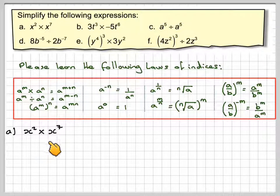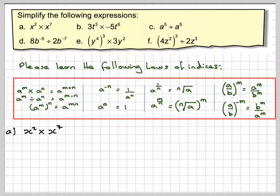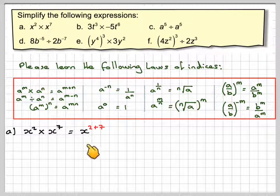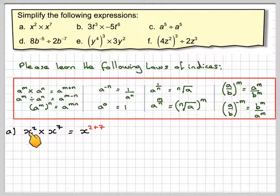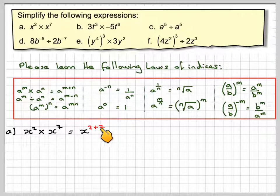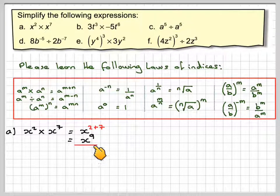Right, so we've got x squared times x to the power of 7. So it's like the first rule here, so we will actually just add the powers together. So write down, they've both got the same base. This is the base, this is the power, or sometimes it's called the index. So they've both got the same base, so it's x to the 2 plus 7, which is x to the 9.